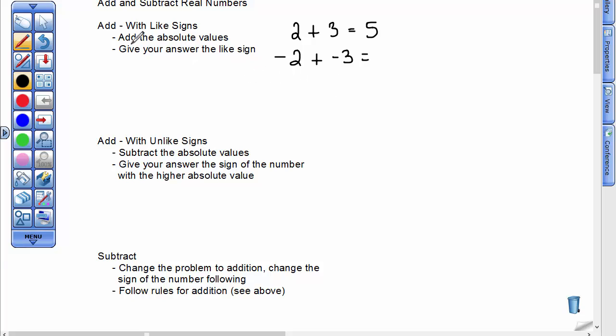You would take those two numbers, and you would add the absolute values of a negative 2 and a negative 3. Well, the absolute values are 2 and 3, and you'd add those, and you'd get the number 5. Then, you'd give your answer the common sign that they share. They share a negative sign, so you have to give your answer so that it's a negative 5, the sign that they share.